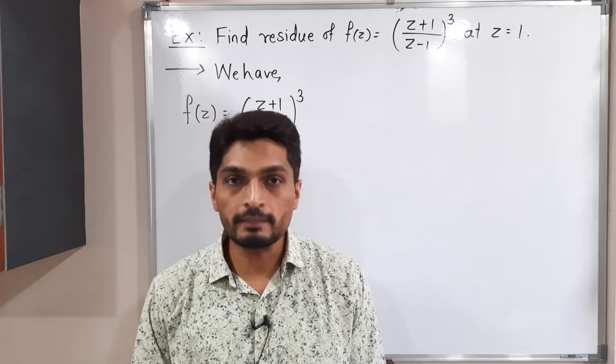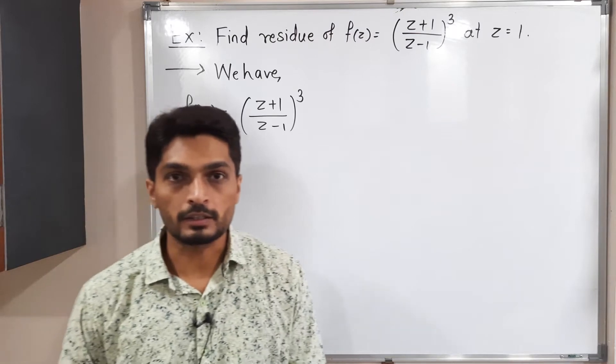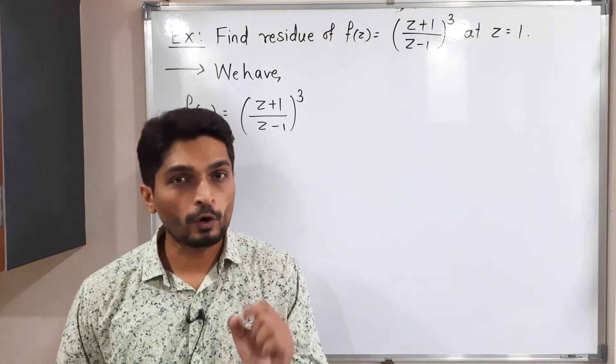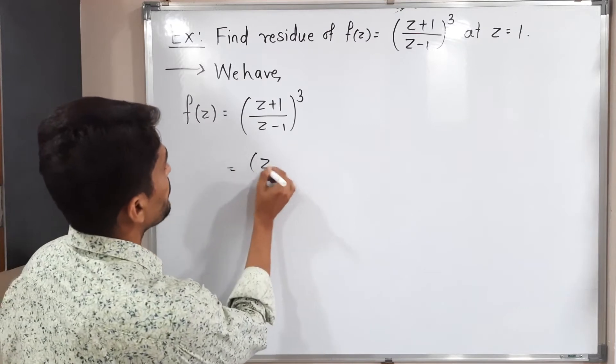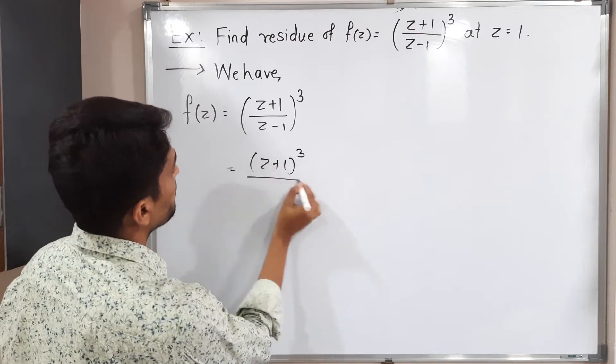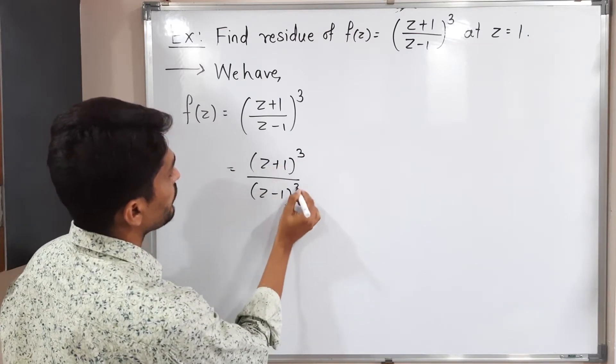Let us write the given function first, which we have already written here. First of all, we have to find the order of this pole. So I will express this function in this way.